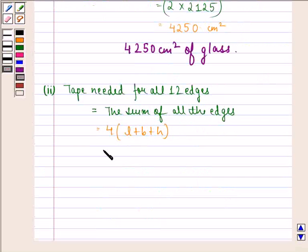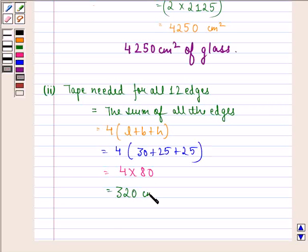The tape needed for all 12 edges is the sum of all edges, which equals 4 times (30 plus 25 plus 25). That is equal to 4 into 80. That is equal to 320 cm. So our answer to the second part is 320 cm of tape.